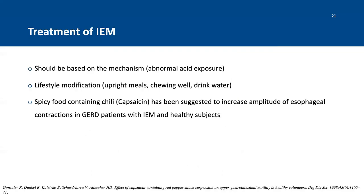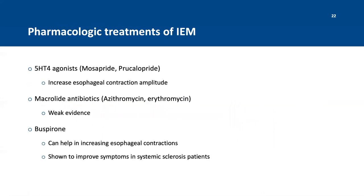Regarding treatment of IEM, it should be based on the mechanism. Lifestyle modifications include eating upright, chewing well, and drinking water with food. Chili containing capsaicin, present in spicy food, has been suggested to increase the amplitude of esophageal contractions in patients with IEM. Pharmacological therapies include prucalopride and mosapride, which are 5-HT4 agonists. Macrolides have very weak evidence and work better in gastroparesis. Vibegron is a somewhat promising drug to increase esophageal contractions, but overall treatment remains very difficult and challenging.